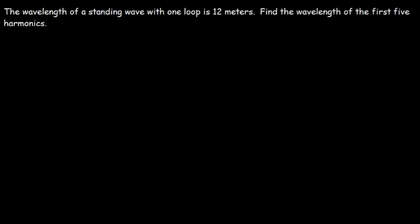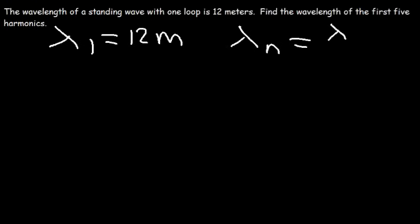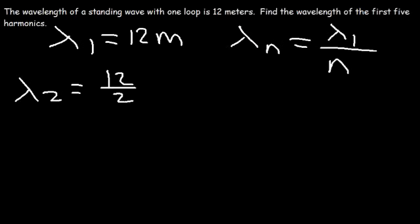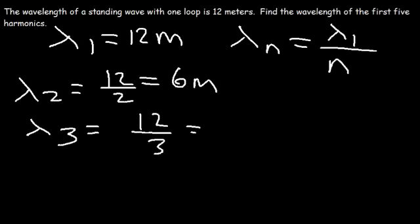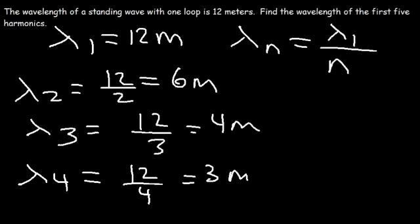The wavelength of a standing wave with one loop is 12 meters. Find the wavelength of the first five harmonics. Lambda 1 is 12 meters. Lambda n equals lambda 1 divided by n, so: lambda 2 is 12 divided by 2, or 6 meters; lambda 3 is 12 divided by 3, or 4 meters; lambda 4 is 12 divided by 4, or 3 meters; and lambda 5 is 12 divided by 5, or 2.4 meters.